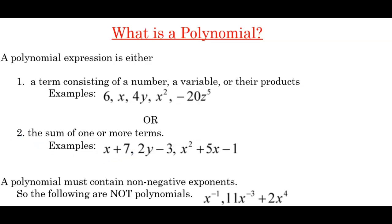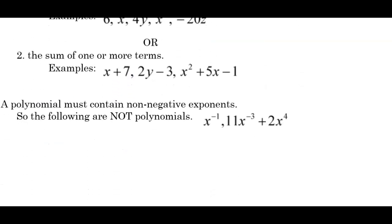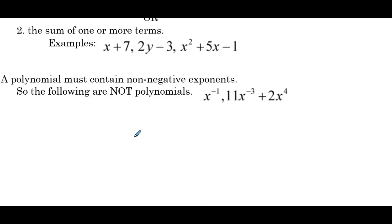To complete the definition of a polynomial, a polynomial must contain non-negative exponents. So for instance, x⁻¹, 11x⁻³ + 2x⁴ are two examples of expressions that are not polynomials. x⁻¹, that exponent is a negative number. No good. In the next expression, one exponent is negative, one is positive, still no good.